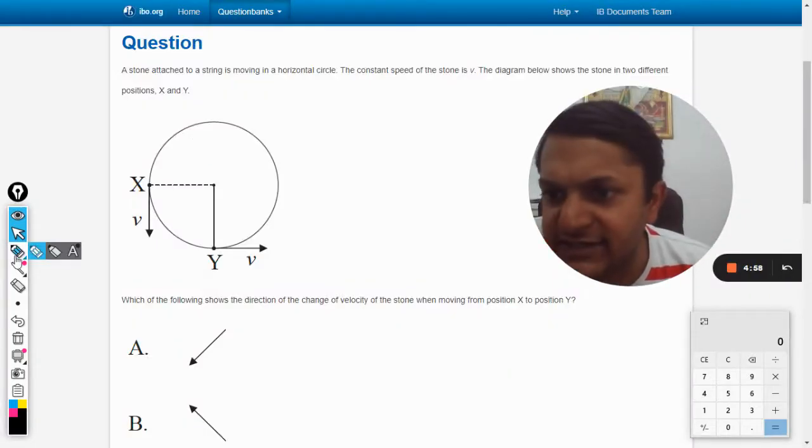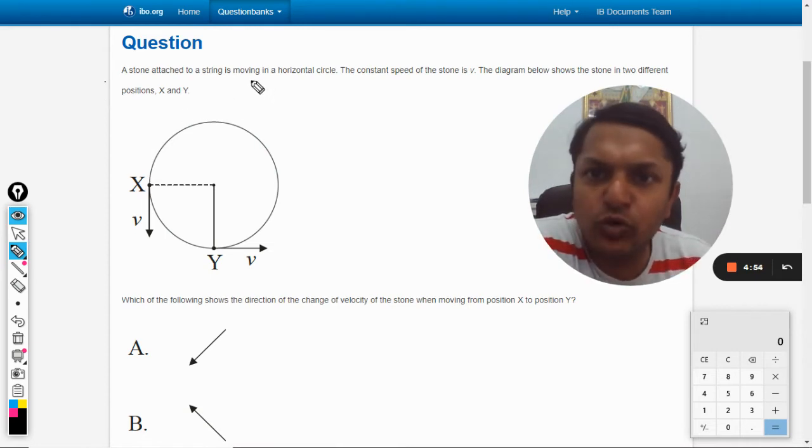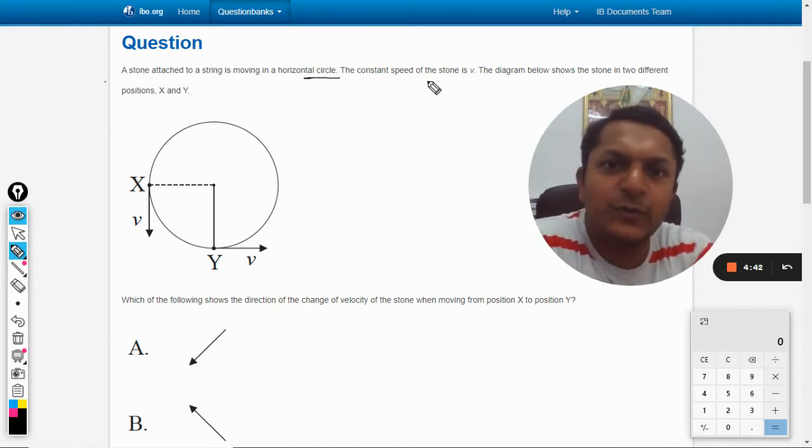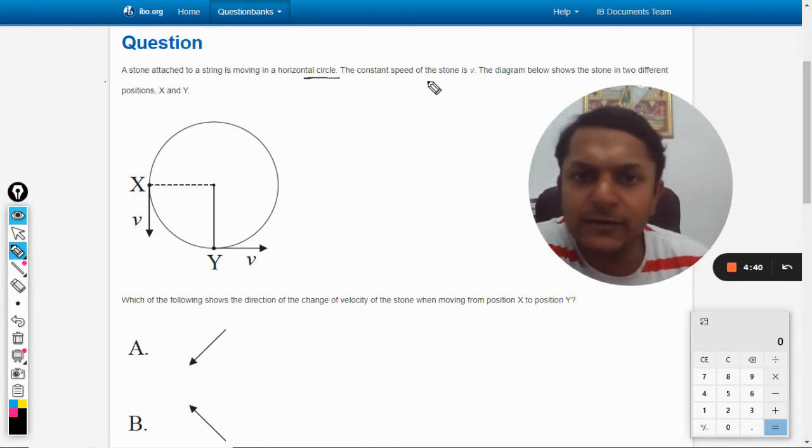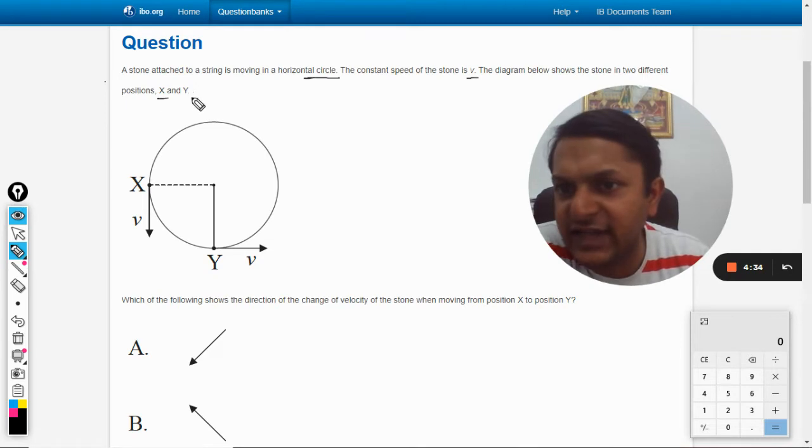Okay students, let's see what's in this question. A stone attached to a string is moving in a horizontal circle. Horizontal circle specifically means we can neglect the effect of gravity. The constant speed of the stone is v. The diagram below shows the stone in two different positions, that is X and Y.